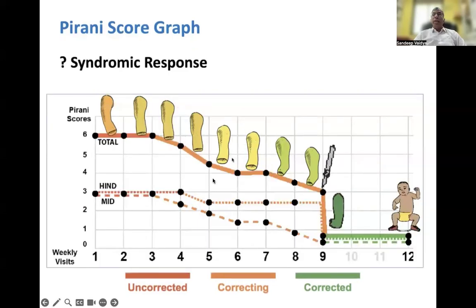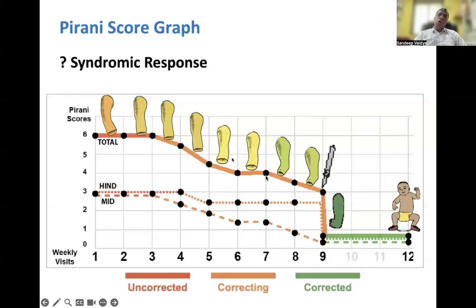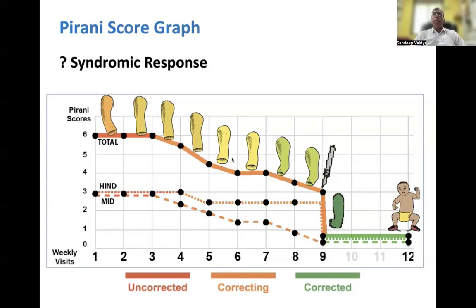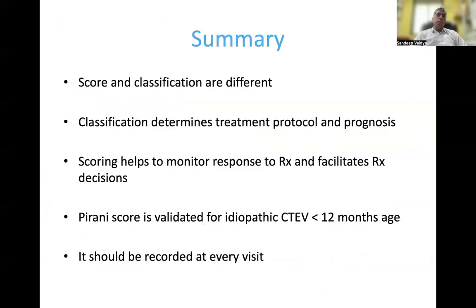The score also helps to identify whether you may be dealing with a syndromic foot. If the Pirani score remains static for a very long period — normally by the end of 5 to 6 casts the midfoot deformity should reach 0 — but both the hindfoot and midfoot deformity fail to correct, this may alert the surgeon to the possibility of a syndromic, neurogenic, or complex atypical clubfoot.